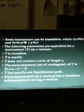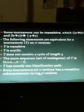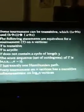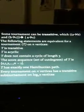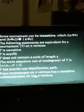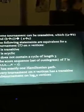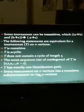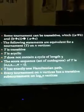Some tournaments can be transitive, where a implies b and b implies c, then a implies c. The following statements are equivalent for a tournament on n vertices: the tournament is transitive, it is acyclic, it does not contain a cycle of length 3, the score sequence is 0, 1, 2, all the way to n-1, and it has exactly one Hamiltonian path. Every tournament on n vertices has a transitive sub-tournament on log₂(n) vertices.